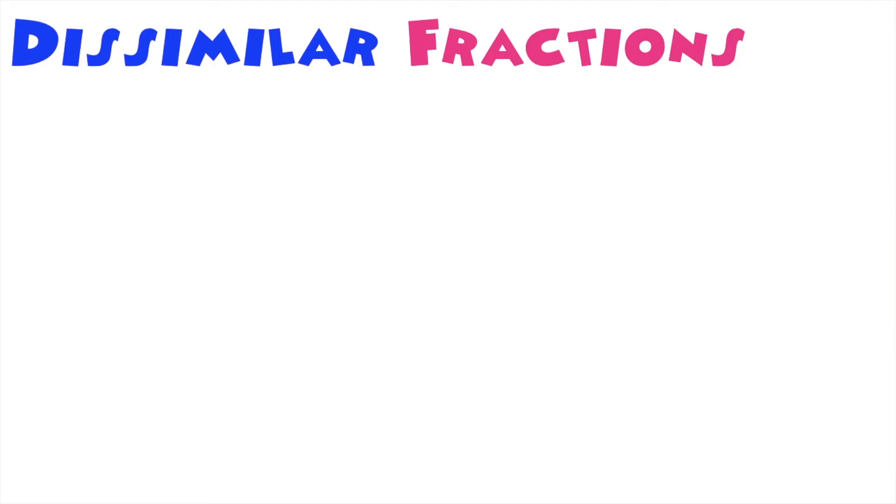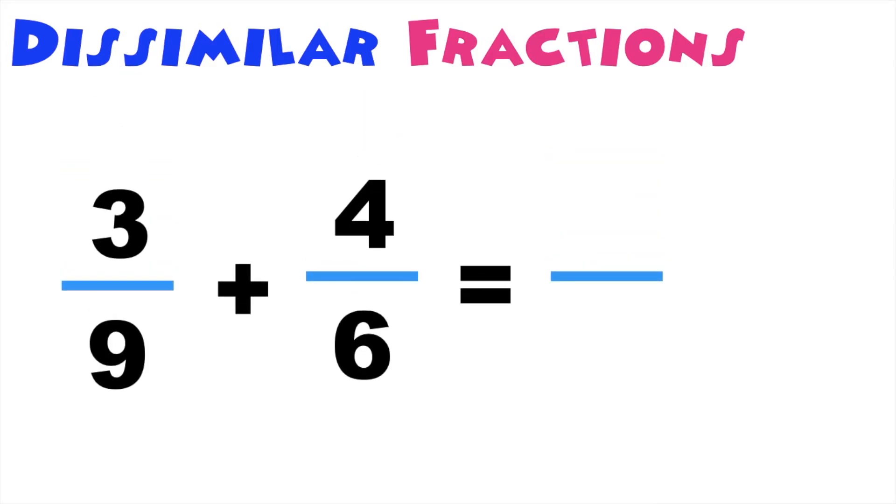How about if we have this? 3 over 9 plus 4 over 6 is equal to blank. Again, children, let's use the butterfly method.